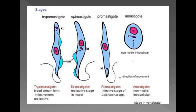Then there is Promastigote. The meaning of 'pro' is before the nucleus. So they have anterior flagella with a central nucleus, and these are elongated, lanceolate-shaped forms.